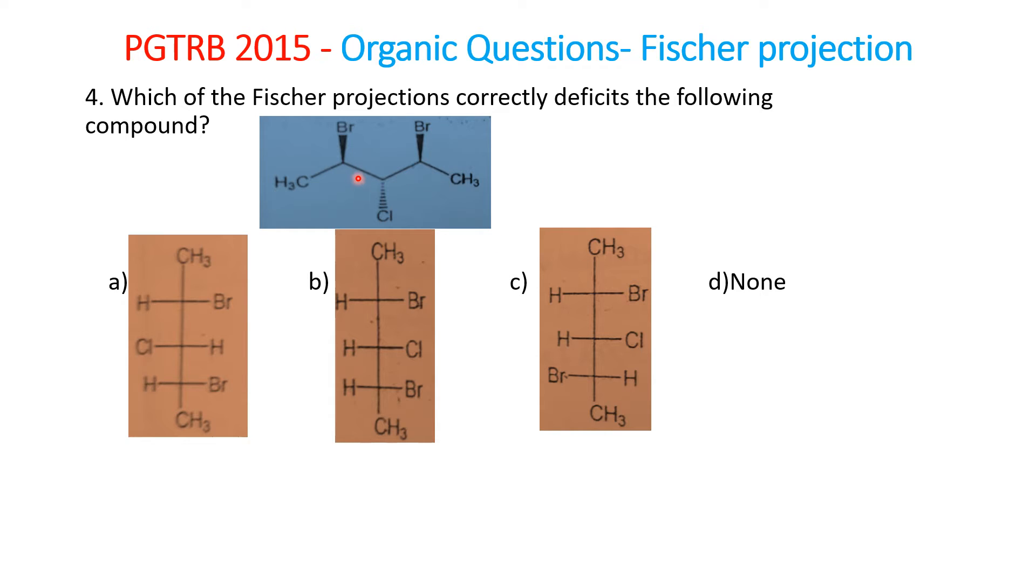You can see this solid wedge and this dashed line bond. We need to find out what these are and which plane they show. This solid wedge line always points towards you - towards the viewer. Wherever it is in the structure, it represents bonds coming towards the view.